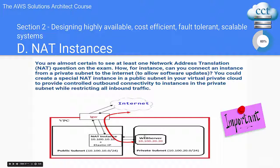Basically, what they're trying to tell you is: if you have a private subnet and it needs to get out to the internet, the way to do that is through a NAT instance using the internet gateway and route tables.